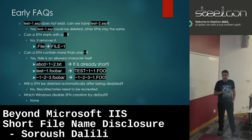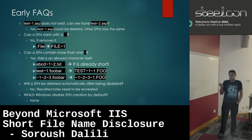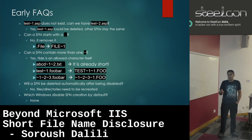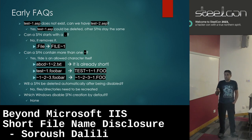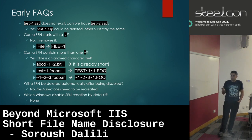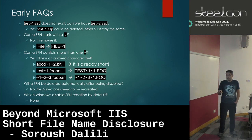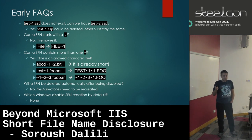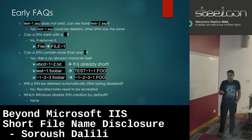Some early Q&A: if you have test-1.asp, can you have test-2.asp? Yes. If test-1 existed previously and was deleted, Windows doesn't rename it — it keeps the name. Can a short file name start with a dot? No, it removes it. For example, .git would become git~1. Also, the tilde character itself is allowed, so a short name can have more than one tilde. A file that looks like a short name but is completely valid 8.3 format won't be assigned a short name by Windows.